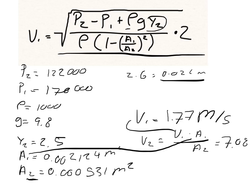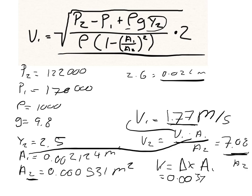For Part C, the volume flow rate equals velocity times area. Using v1 = 1.77 m/s with A1, or equivalently v2 = 7.08 m/s with A2 — both give the same answer — the volume flow rate equals 0.003759 cubic meters per second. That is the final answer.